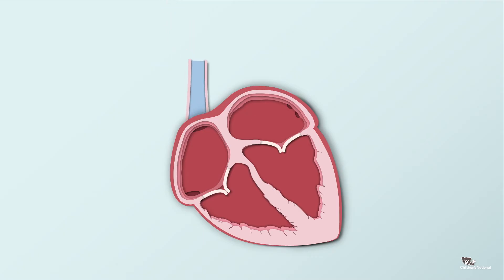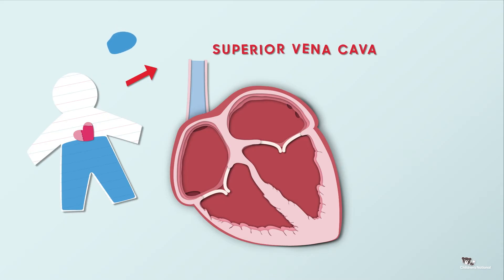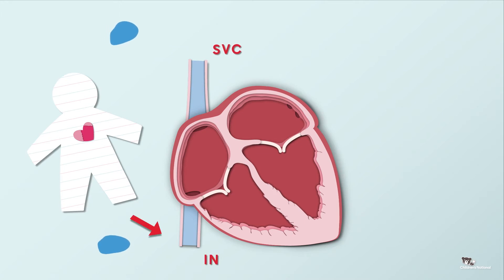The big vein that takes the blood from the upper part of the body is called the superior vena cava, or SVC. And the big vein that takes the blood from the lower part of the body is called the inferior vena cava, or IVC. They take the blue blood into the right atrium.